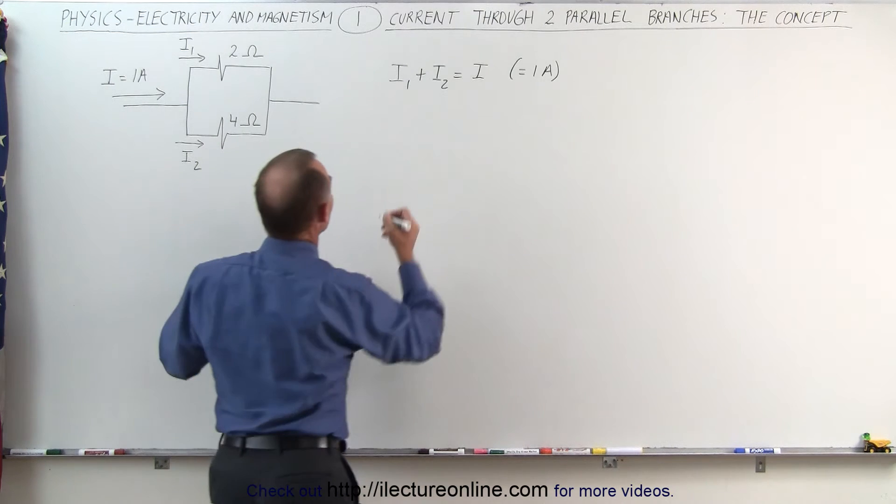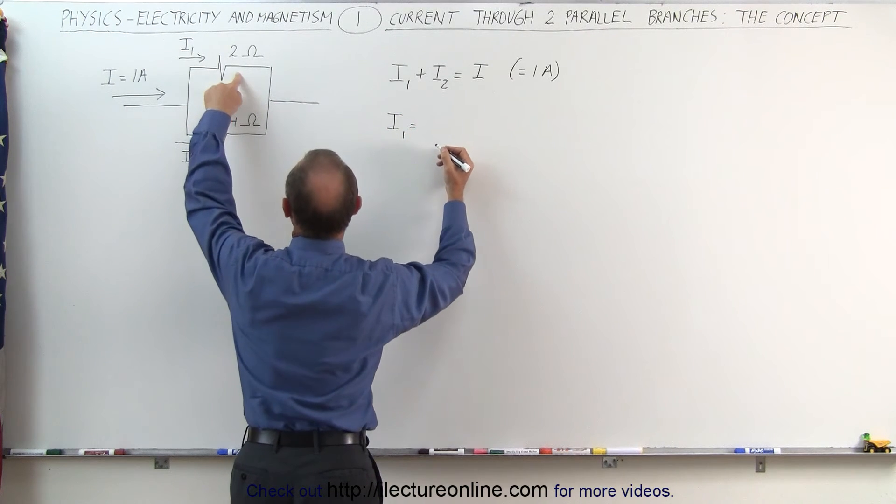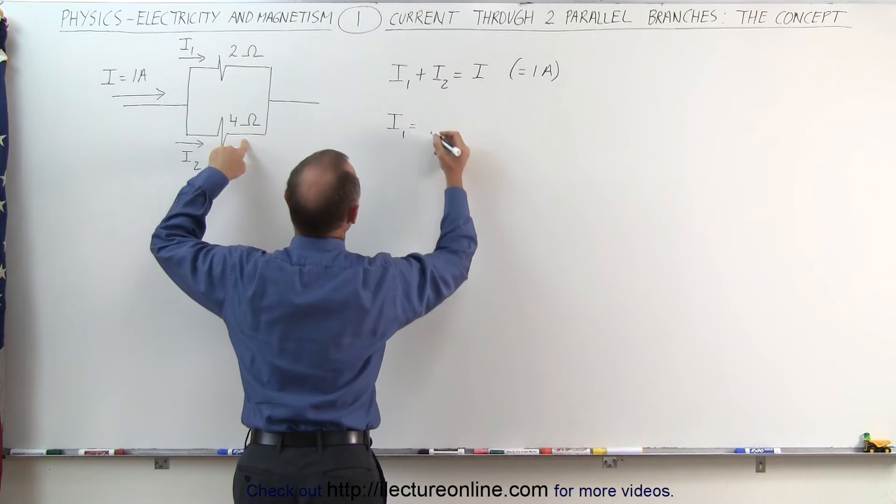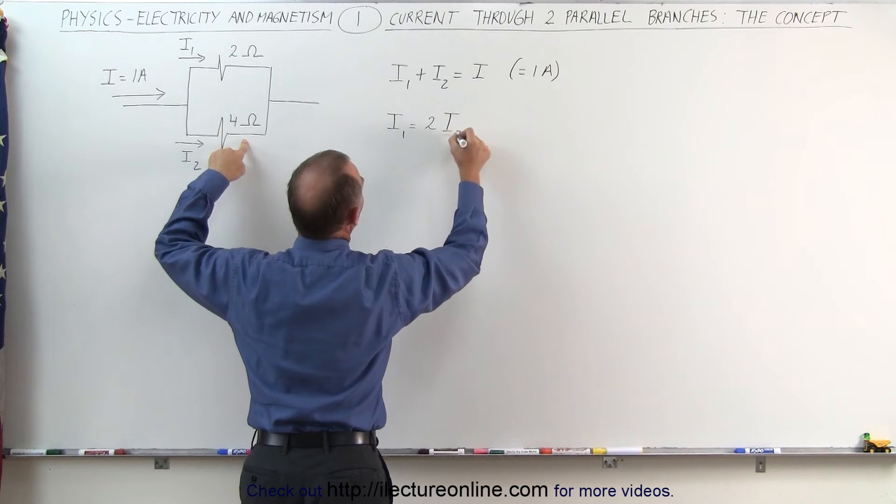So what we can write here is, in this case, I1 will be equal to, since it has half the resistance compared to the second branch, it will have twice the current. Therefore, I1 will be two times I2.